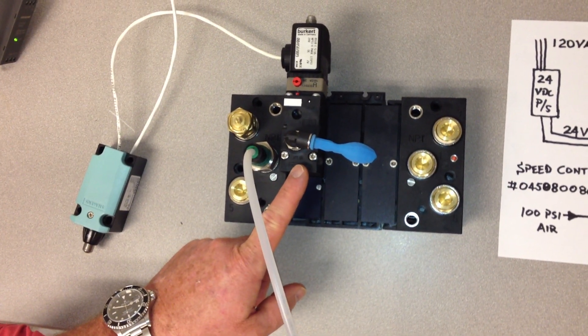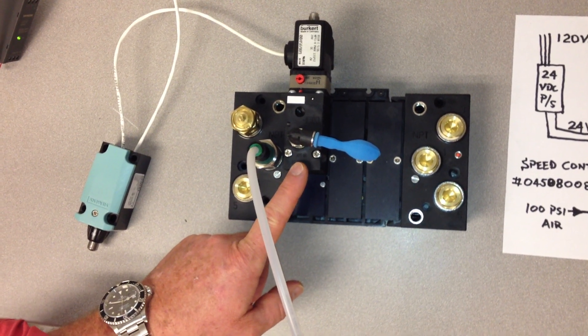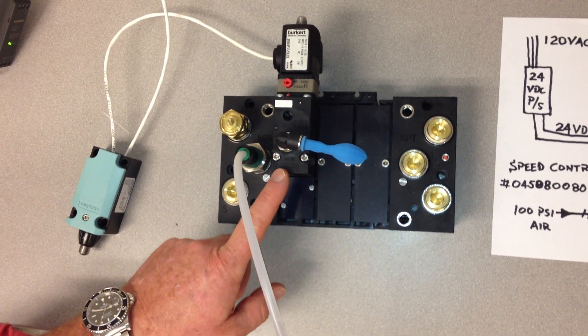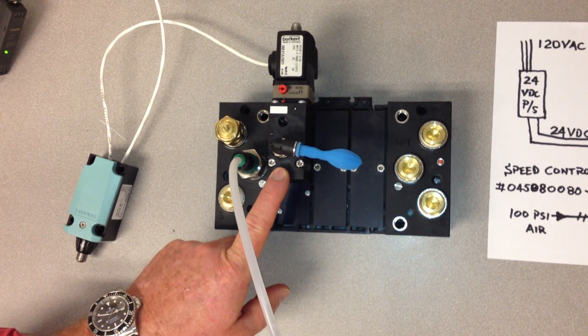Here's the three-way solenoid valve, and in order to demonstrate that there is actually air flowing, we've put a balloon on the end of it, which would be your piece of process equipment.